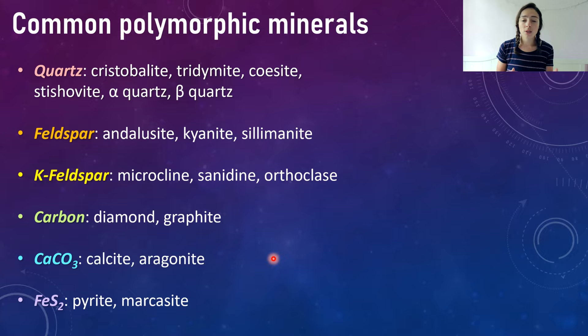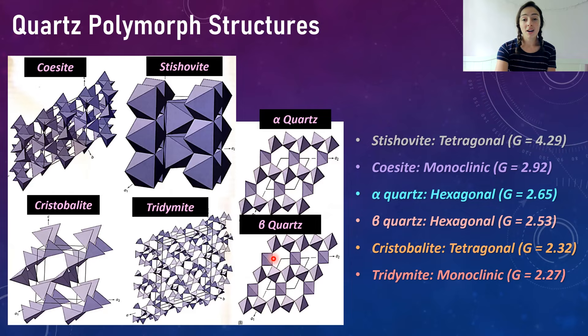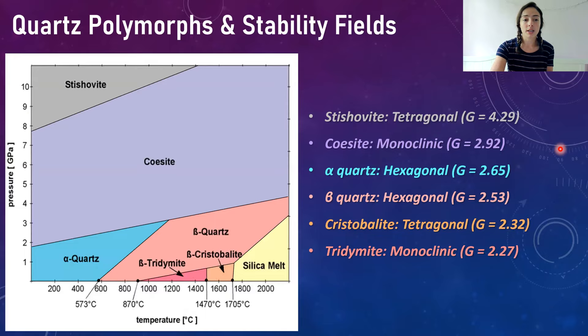For quartz polymorphs: stishovite is tetragonal with a G value of 4.29 — a very high specific gravity, indicating a compact structure stable at low temperature and high pressure, as shown in its stability field. Coesite is monoclinic with a G value of 2.92, a much lower G value. This is probably why its stability field extends to higher temperatures — lower G means higher lattice energy.